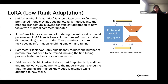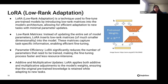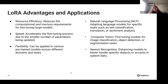Instead of updating the entire model's parameters, LoRA inserts these low-rank matrices of much smaller dimensionality — this is where efficiency comes in. These matrices capture the task-specific information, such as sentiment analysis and intent classification for marketing, enabling efficient fine-tuning. LoRA significantly reduces the number of parameters that need to be trained, making the fine-tuning process a lot faster and less resource-intensive. With additive and multiplicative updates, the original pre-training knowledge is retained while adapting to new tasks, so there's no catastrophic forgetting with LoRA.